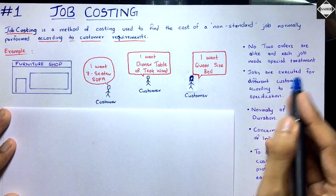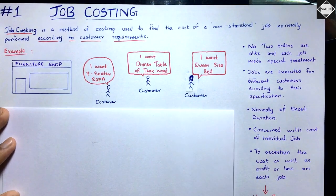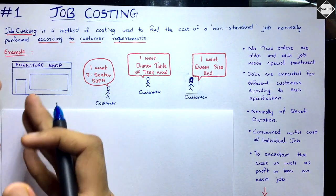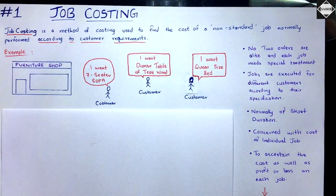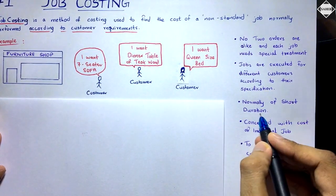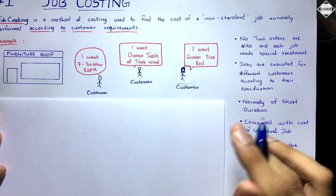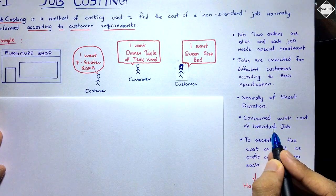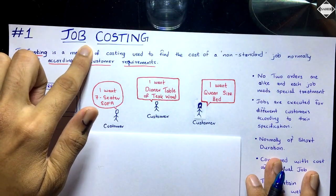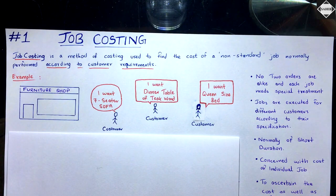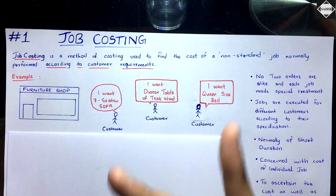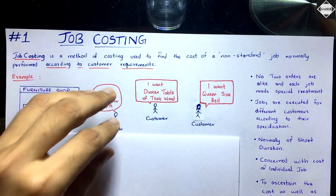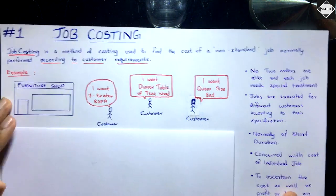Jobs are executed for different customers according to their specifications — for example, a dinner table made of teakwood requires purchasing that specific material. Job costing is normally of short duration, not more than a month, unlike contract costing. It is concerned with the cost of individual jobs — you do costing of specific jobs, not of the entire business.